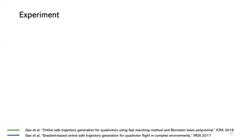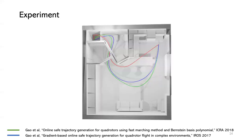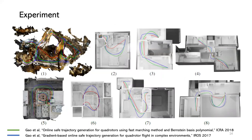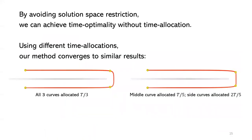Here I will show some experiments. Our trajectory is the red trajectory, and the previous methods are the blue and green ones. You can see our trajectory is very short. In our table, our trajectory is always the shortest one, and the UAV traveling along our trajectory also uses the minimal time. By avoiding solution space restriction, we achieve time optimality without explicit time allocation. Using different time allocations, our method converges to similar results, as the animation shows.